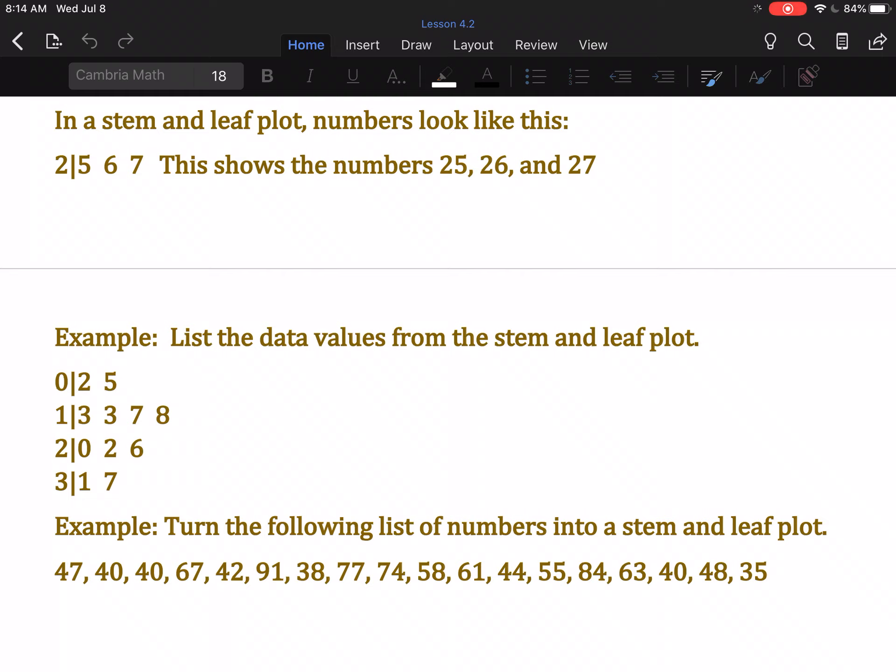The number or numbers on the left are the first digits of the number. The single number on the right side is always just the number in the ones place. We do not use commas in a stem and leaf plot.